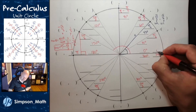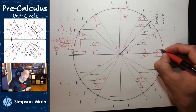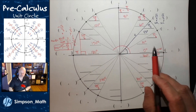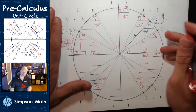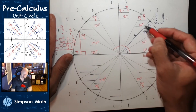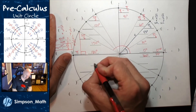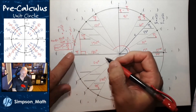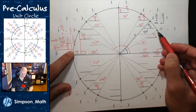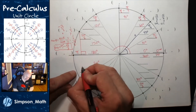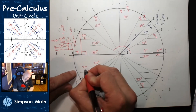0 degrees is also 0 radians. Let's finish off the 30s, or the pi sixths. Counting by 30s: 30, 60, 90, 120, 150, 180, 210 — that's 7 pi sixths. I didn't have to do any multiplication or use a calculator. I just counted.